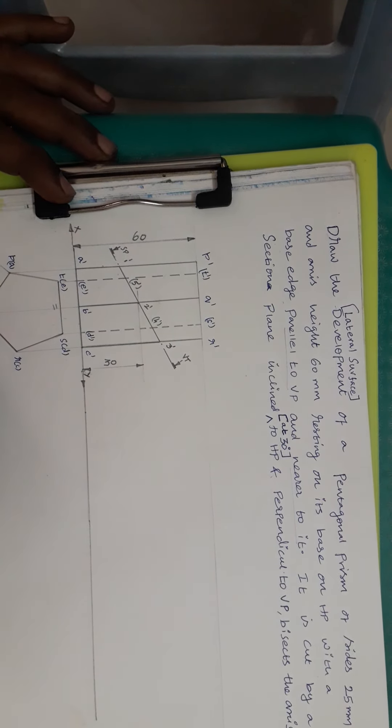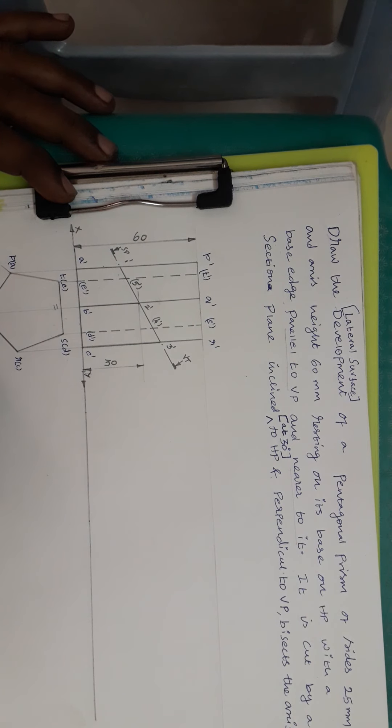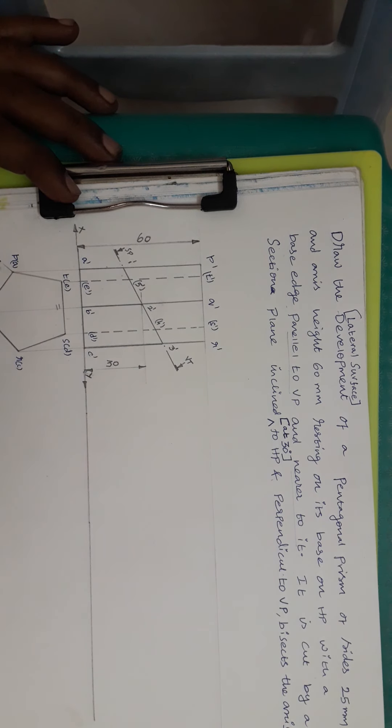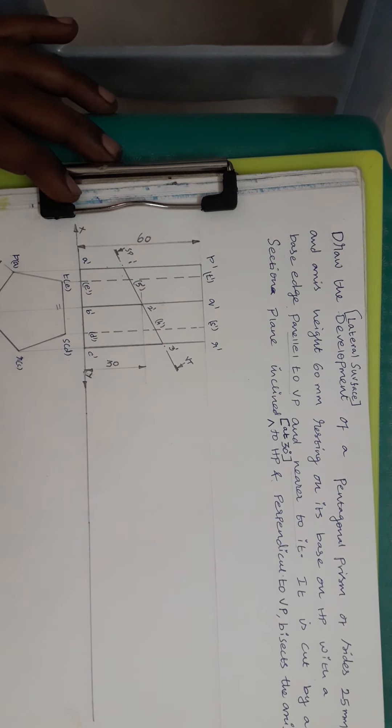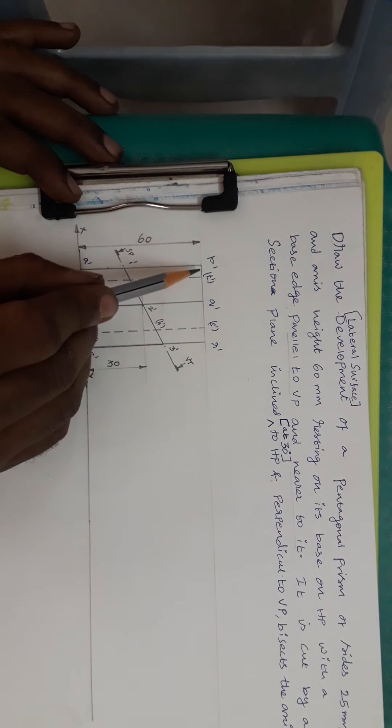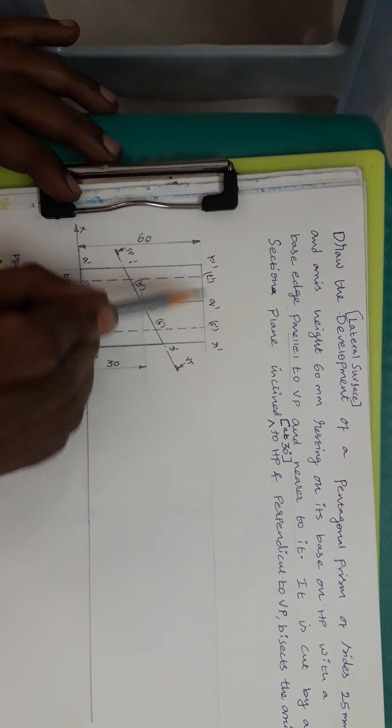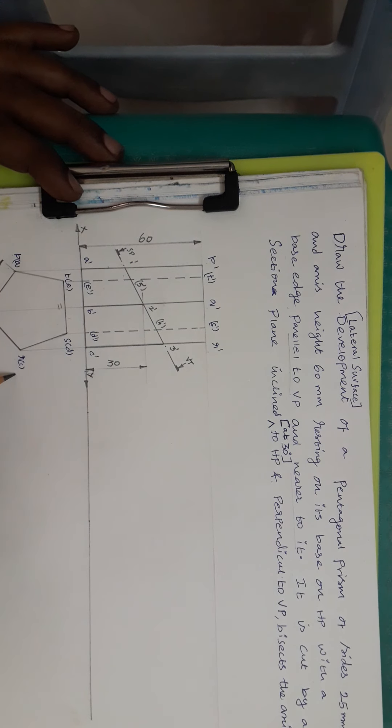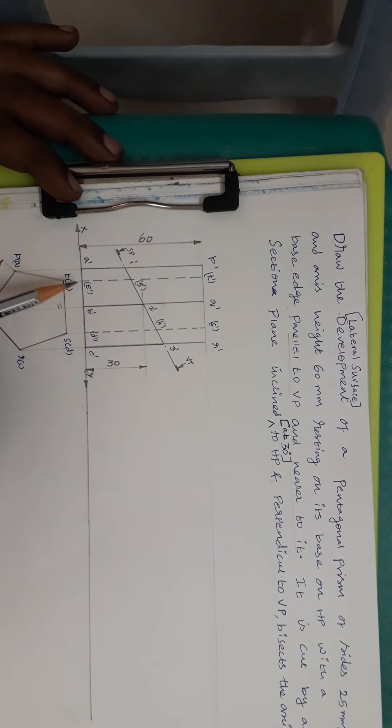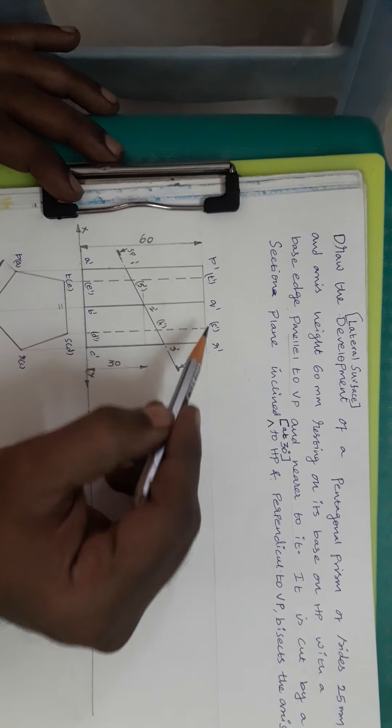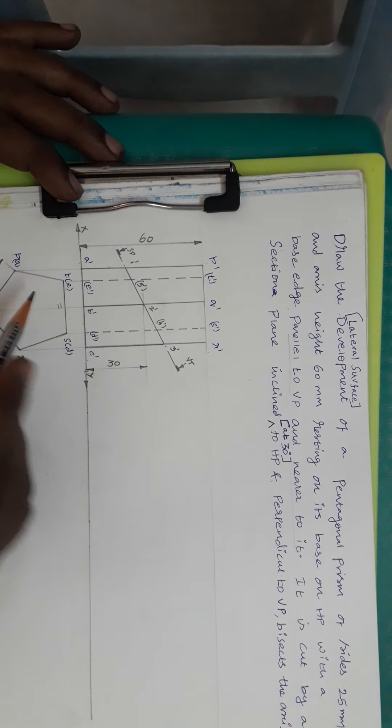Similarly, when we see from this side, we will get the elevation that is the front view. We will get PQR visible and ST hidden. Similarly, in the bottom, ABC visible and DE hidden. So A dash, B dash, C dash visible, D dash, E dash hidden. That is what we are getting ET and SD line as hidden lines.